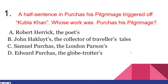The first question: a half sentence in Purchas's Pilgrimage triggered off Kubla Khan. Whose work was Purchas's Pilgrimage? This was a question asked for NET, and the answer is C — Samuel Purchas. He was a clergyman and also a geographer, and the work was published in the year 1613.